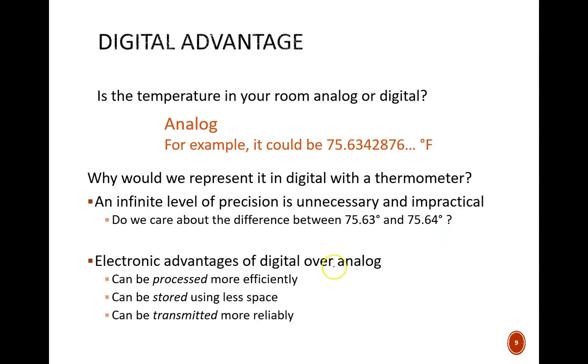The electronic advantages of digital over analog are listed here. Digital information can be processed more efficiently, such as computing the difference between two temperatures. It can be stored using less space, just a specified number of bits. It can be transmitted more reliably. If there is any interference, that can be observed and corrected, or at least mitigated.